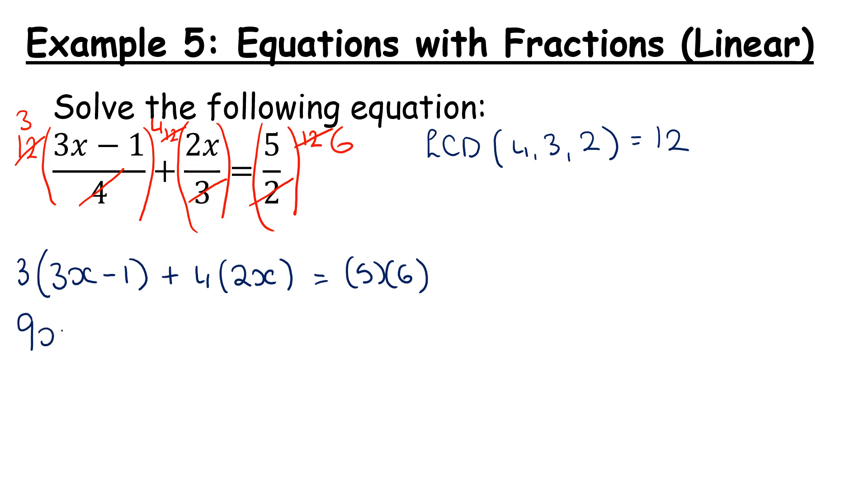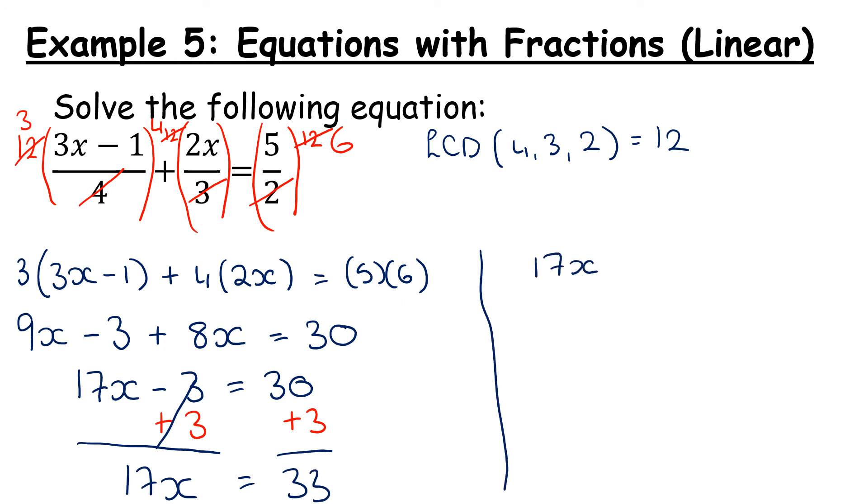Let's expand the brackets, 9x minus 3 plus 8x, equals 30. Remember to simplify, so we end up with 17x minus 3, equals 30. I'm going to add a 3 to both sides, and we get 17x equals 33.